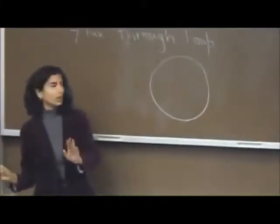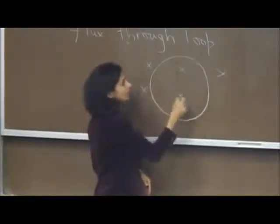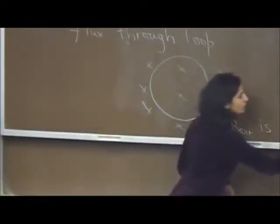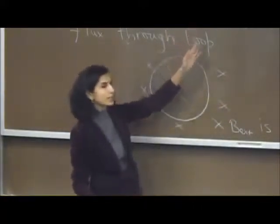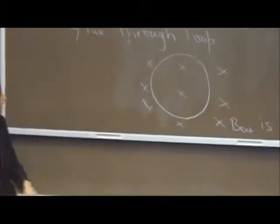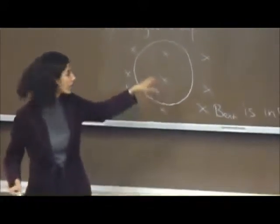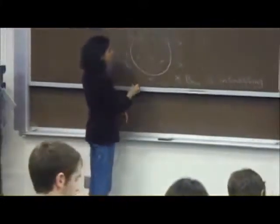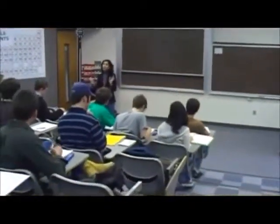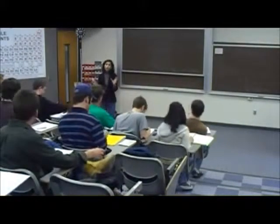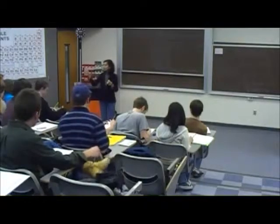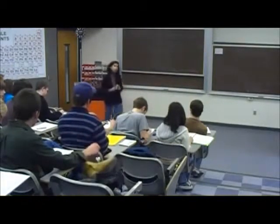Suppose you have a wire loop in a magnetic field pointing into the board, and B external is increasing. Using Lenz's law, tell me whether the current should be clockwise or counterclockwise. First ask: should the induced magnetic field inside the loop point toward you or into the board? Then use the right-hand rule for magnetic field to find which way the current should be. Work with the person next to you.